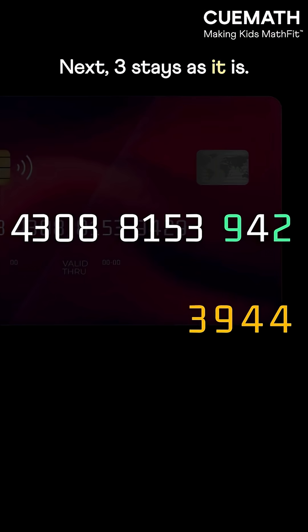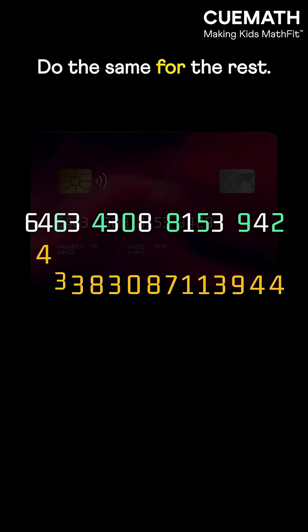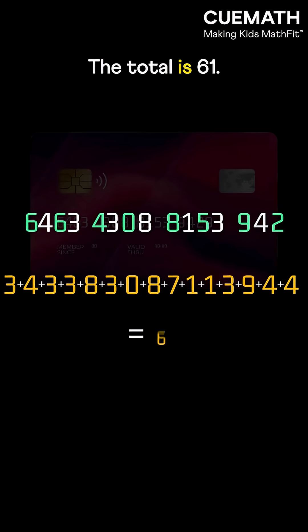Next, 3 stays as it is. 5 doubles to 10. Add the digits, we get 1. Do the same for the rest, then add all the digits. The total is 61.